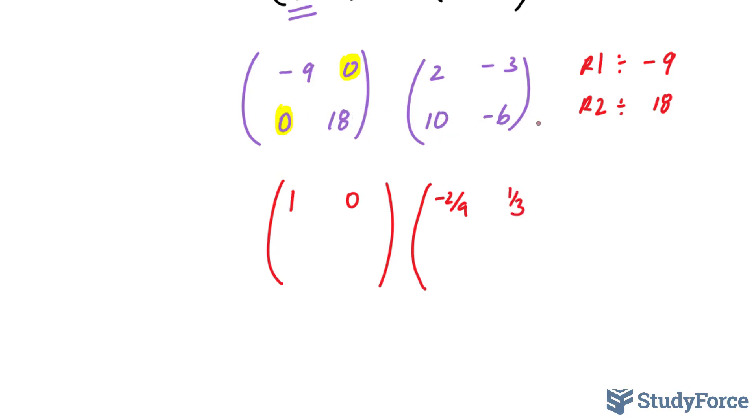Now, all of these elements will be divided by 18. That remains at 0. This becomes 1. This becomes 10 over 18, which reduces down to 5 over 9. And this element divided by 18 gives us negative 1 third.